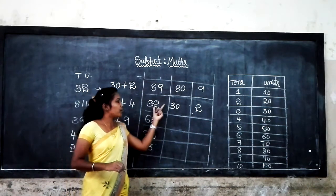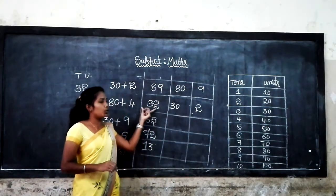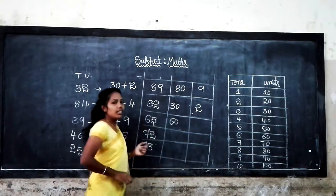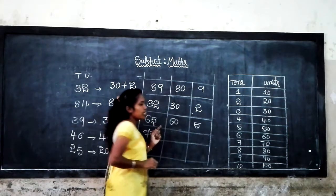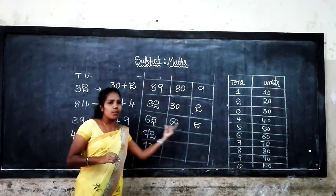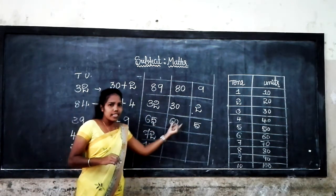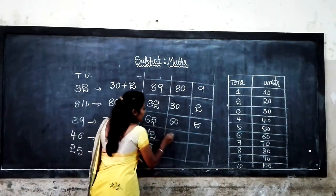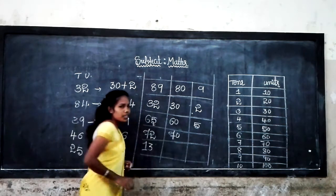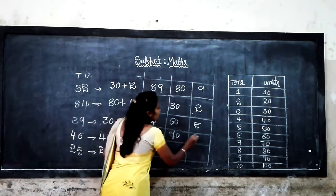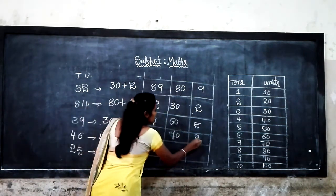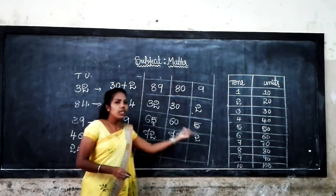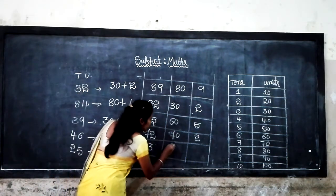The expanded form of 32 is 30 plus 2 is equal to 32. Then the tens of 65 is equal to 60, then the units 5. The expanded form of 65 is 60 plus 5 is equal to 65. The expanded form of 72 is 70 plus 2 is equal to 72.